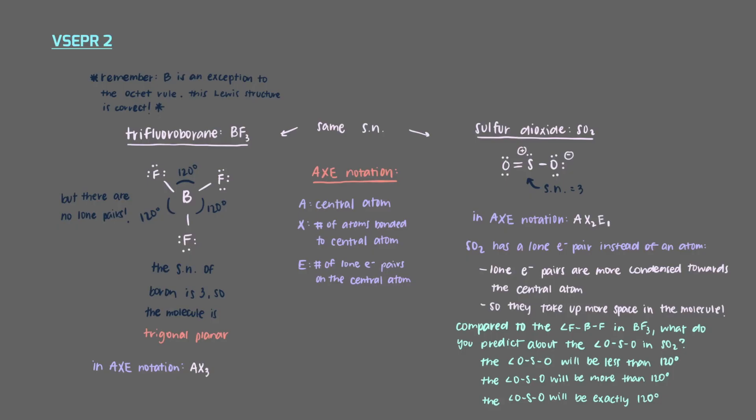Even though SO2 has a steric number of 3, the lone electron pair takes a little more space and changes the spacing of the bonded atoms slightly. Because the lone electron pair takes up more space than a bond to another atom, the lone pair will force the bonded atoms away from it. When the individual bonded atoms are pushed away from the lone pair, they are also being pushed towards each other. Because of this, the angle between the two oxygens in SO2 is less than 120 degrees.